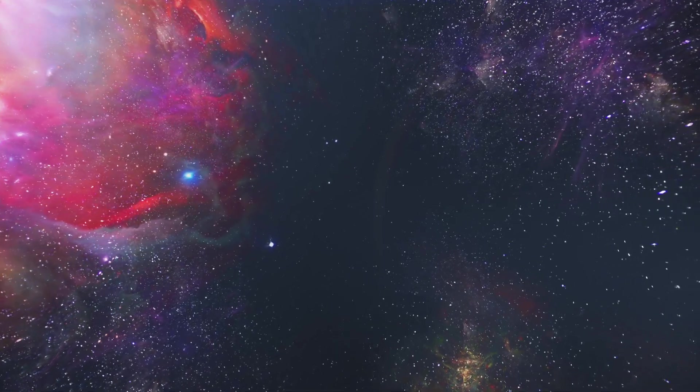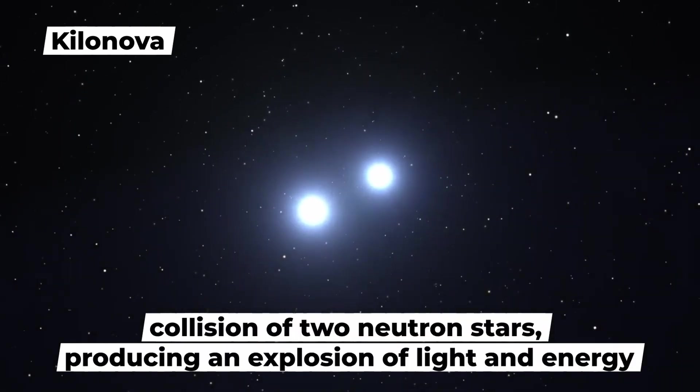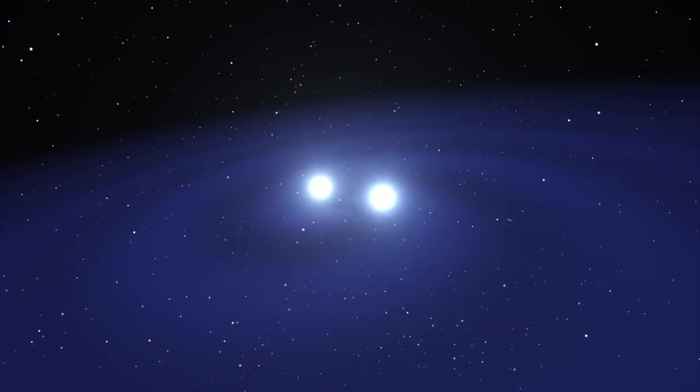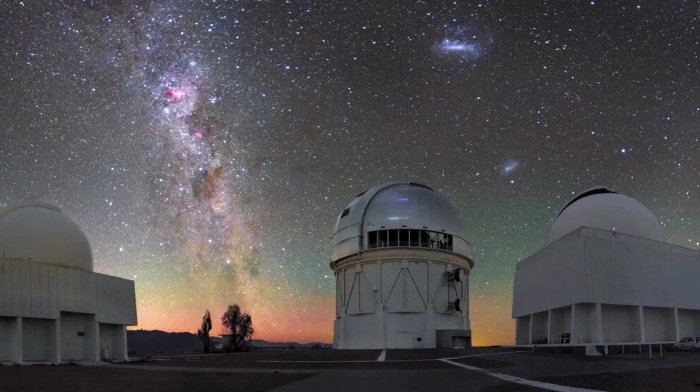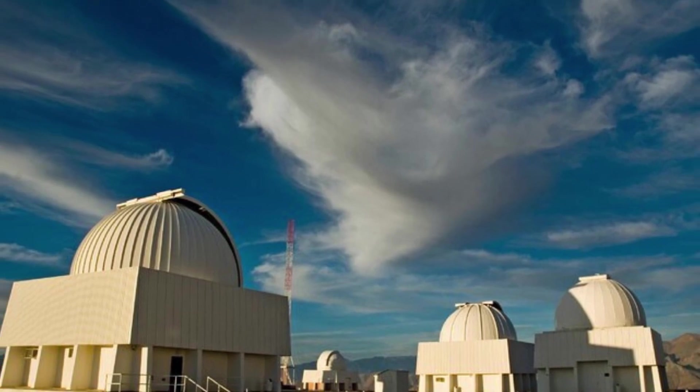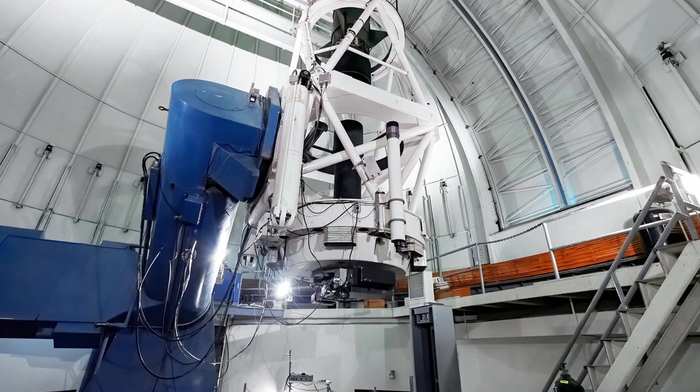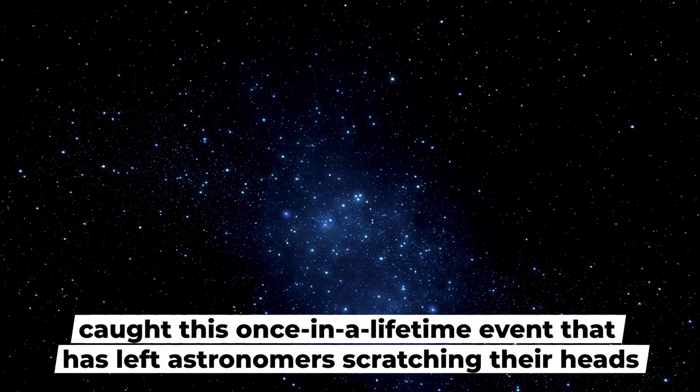In the vastness of space, a rare event known as a kilonova occurred, the collision of two neutron stars producing an explosion of light and energy. It was luckily witnessed by a telescope so advanced it makes your smartphone camera look like child's play. We're talking about the SMARTS 1.5 telescope, and it caught this once-in-a-lifetime event that has left astronomers scratching their heads.